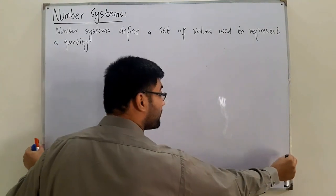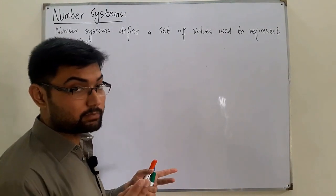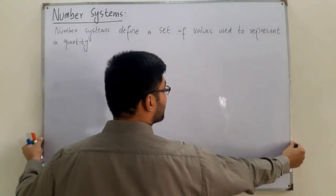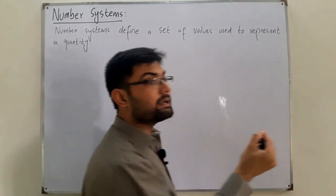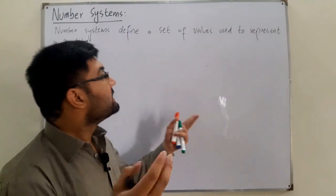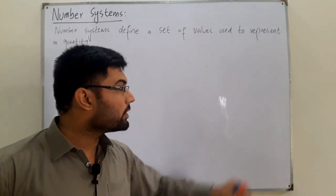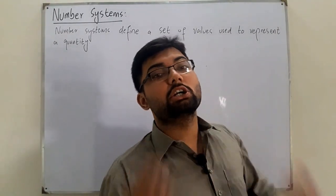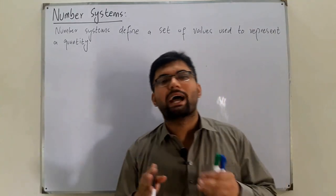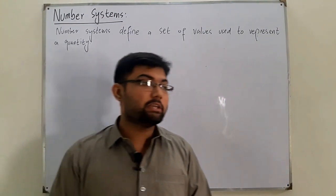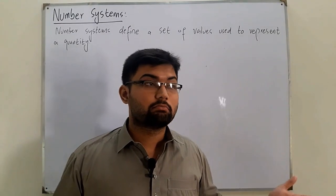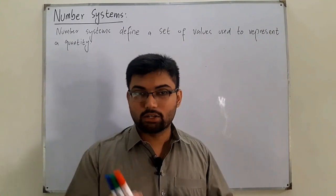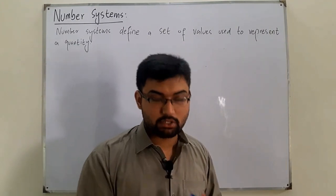Let the quantity be the length or width of this board. If I'm measuring the width, I need numbers. I take a measuring tape, put it over here, and it gives me the length — let's say the length of this board is four feet. But this four feet is in a certain number system; it may be seven feet in some other system. So we discuss these different number systems.